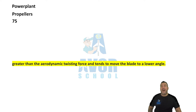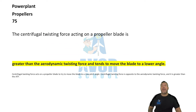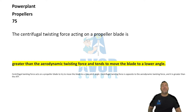Number 75: The centrifugal twisting force acting on a propeller blade is greater than the aerodynamic twisting force and tends to move the blade to a lower angle.